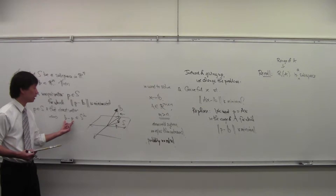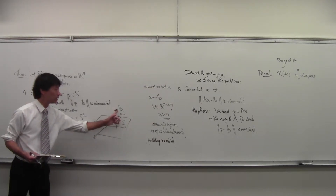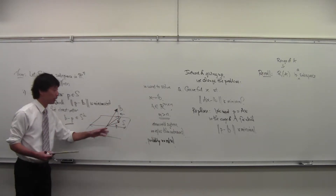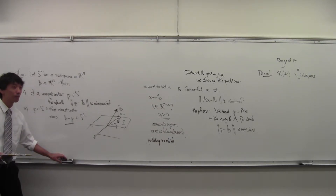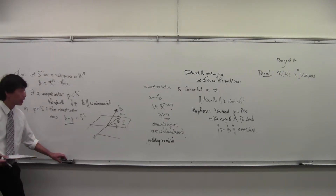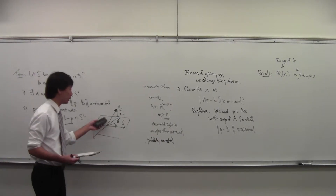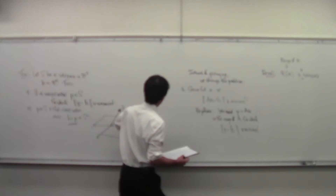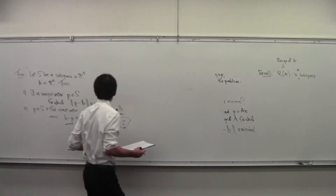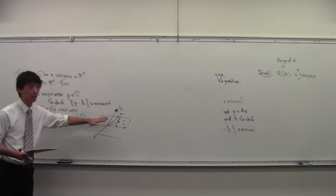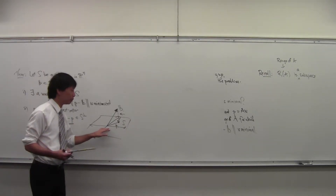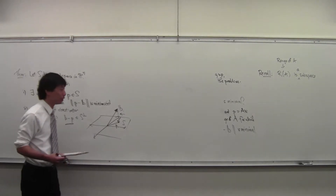So the way you find the vector in S for which the error is smallest is to look for the one where the difference is in S⊥ — the difference is perpendicular to S. This works in n-dimensional space for whatever subspace you have. Your three-dimensional intuition holds true in all dimensions.